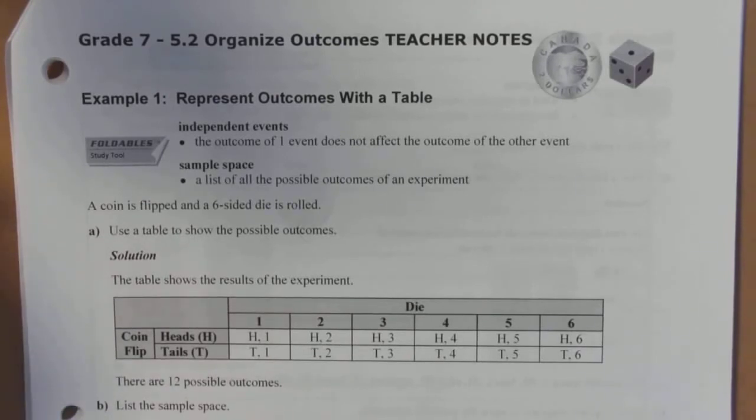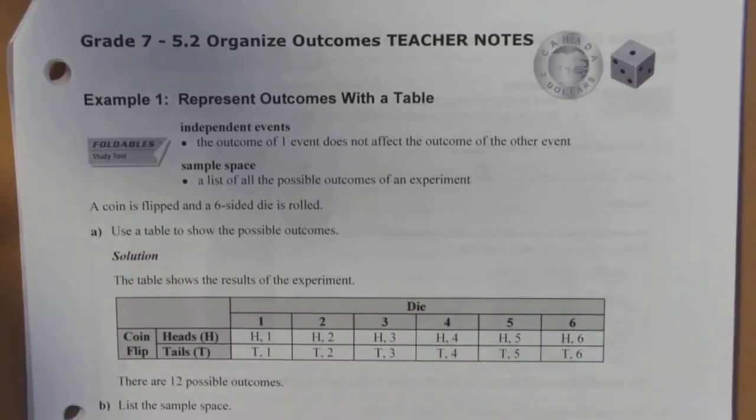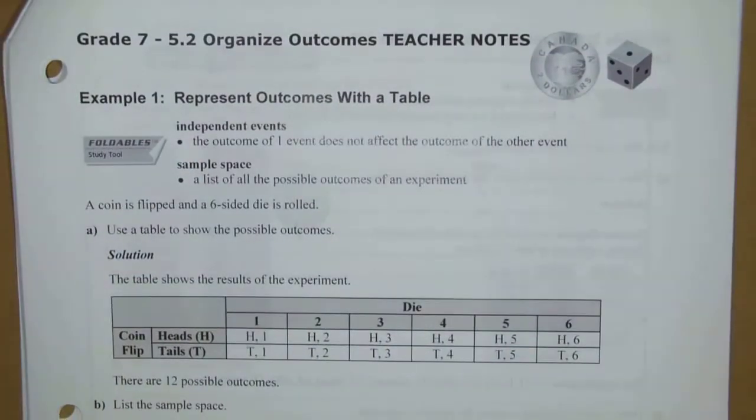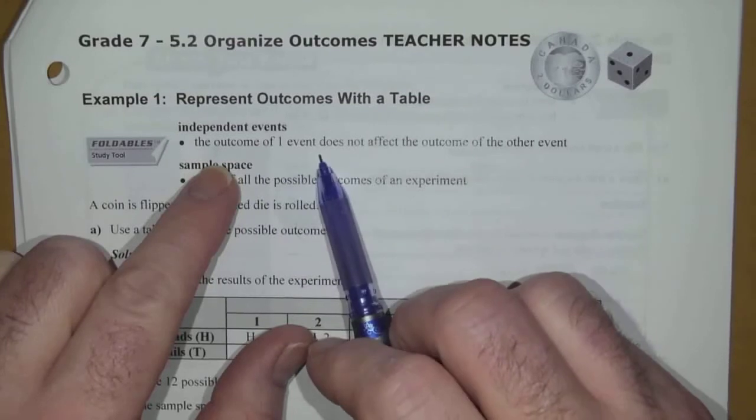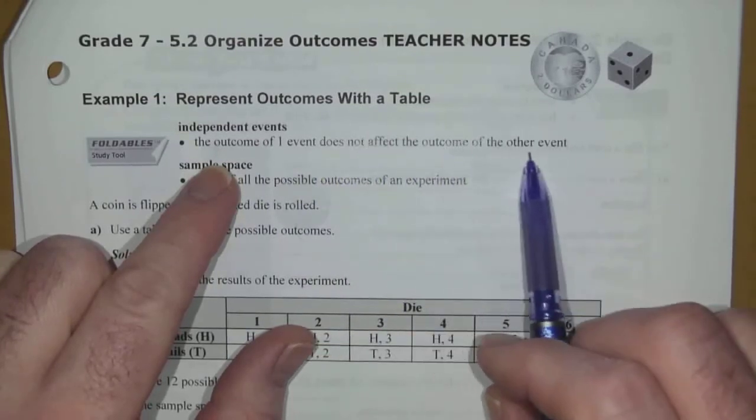Represent the outcomes with a table. So, let's talk about independent events. That definition is, the outcome of one event does not affect the outcome of another event.